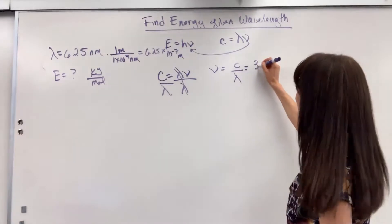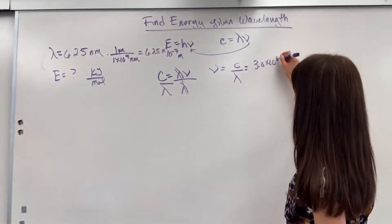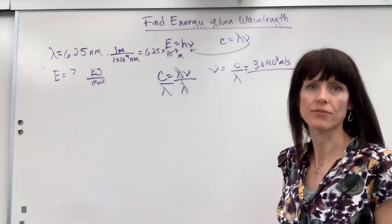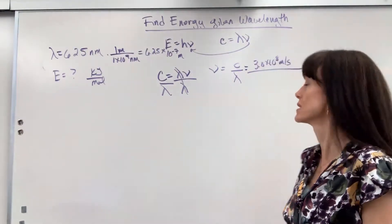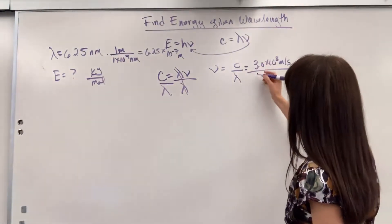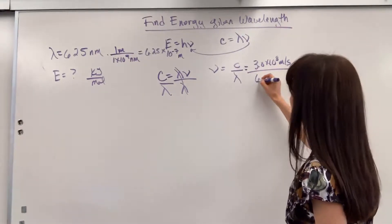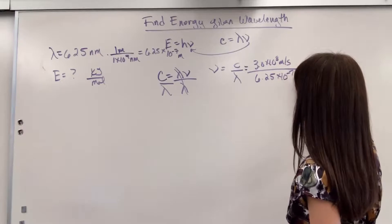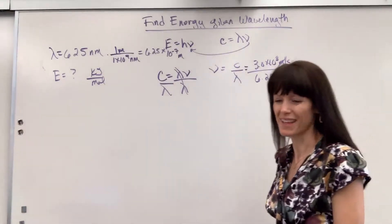Speed of light, 3.0 times 10 to the 8 meters per second. Again, if you're doing AP, use the AP reference. I think it's 2.98 times 10 to the 8. Lambda is going to be 6.25 times 10 to the negative 7 meters. Notice meters cancels out.